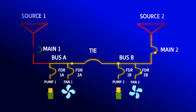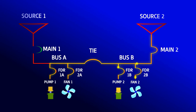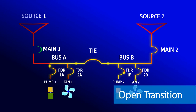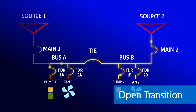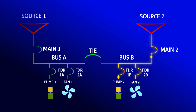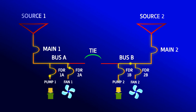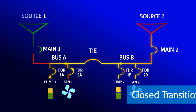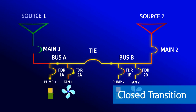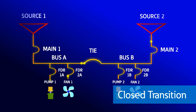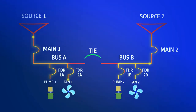When the lost source returns, there are two options to return back to normal. If your system is set up for an open transition, the tiebreaker will open prior to the lost source being connected, causing a momentary disruption to half of the loads. With a closed transition, the sources are paralleled prior to the tiebreaker opening and the loads are maintained.